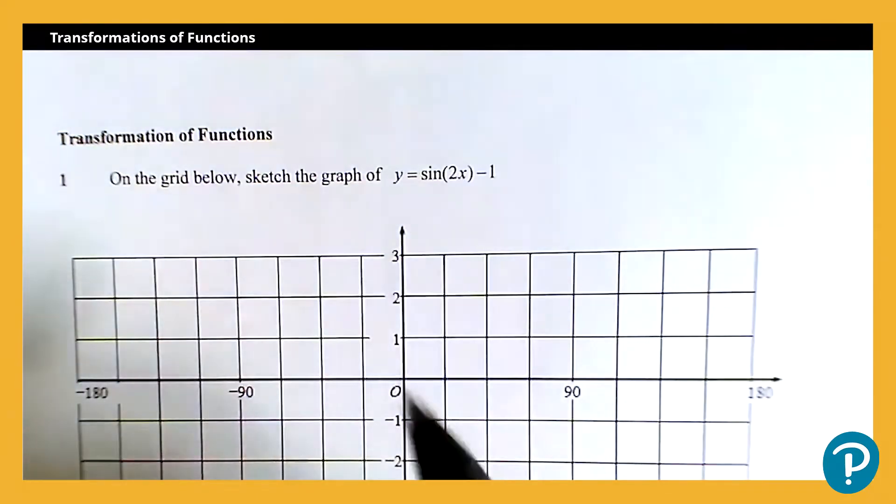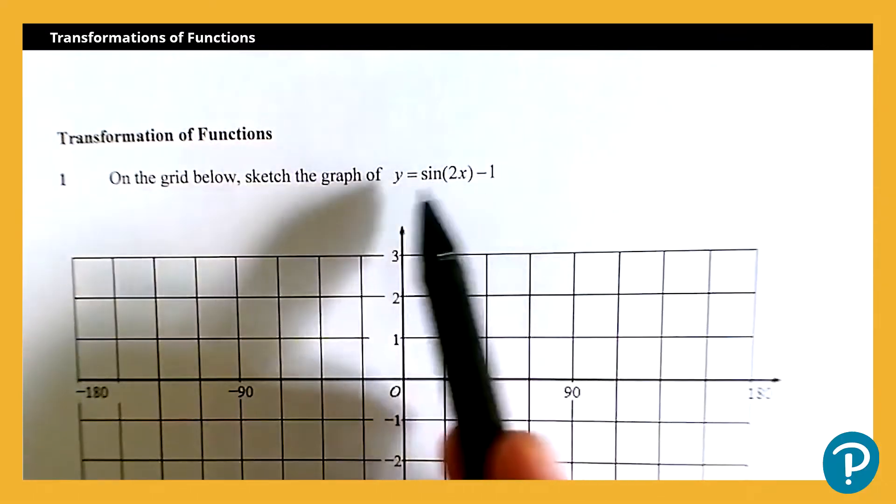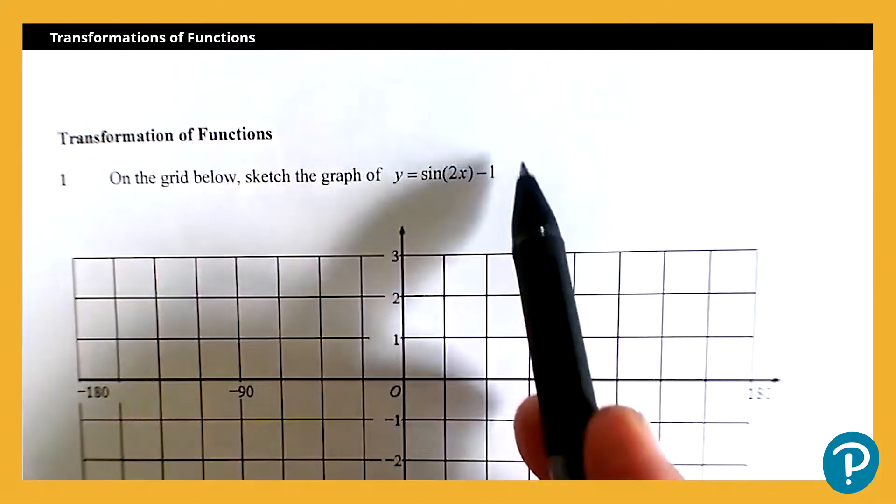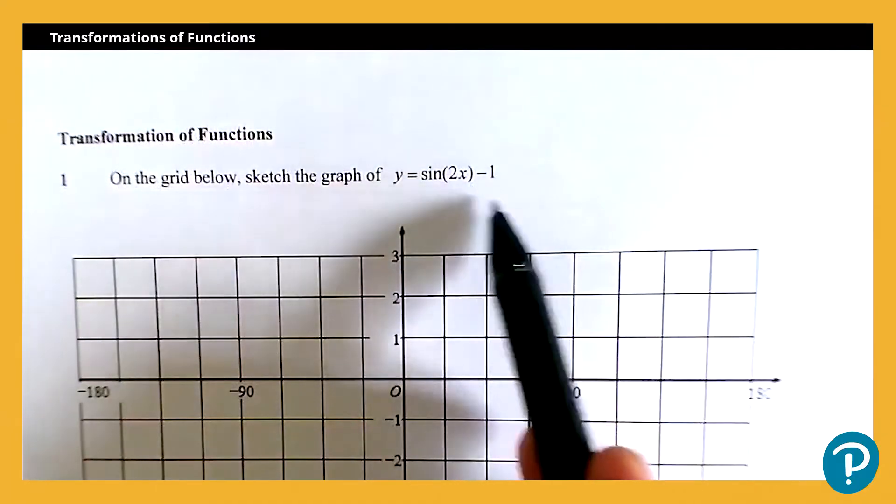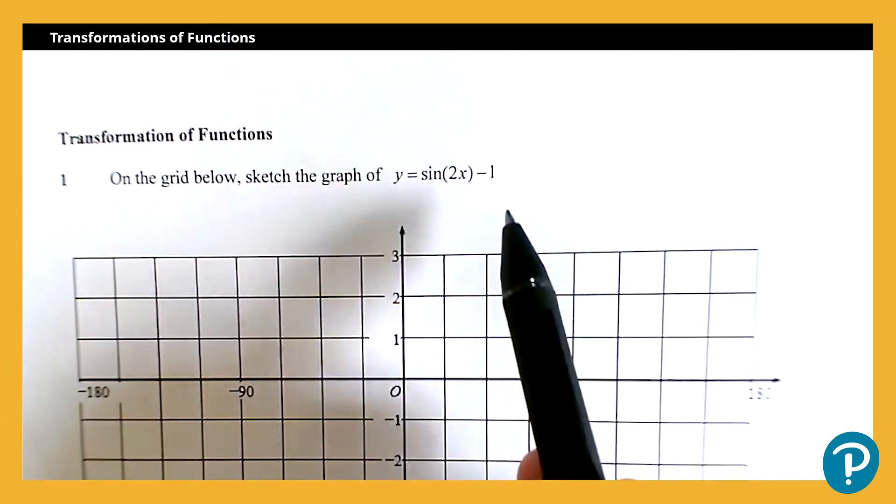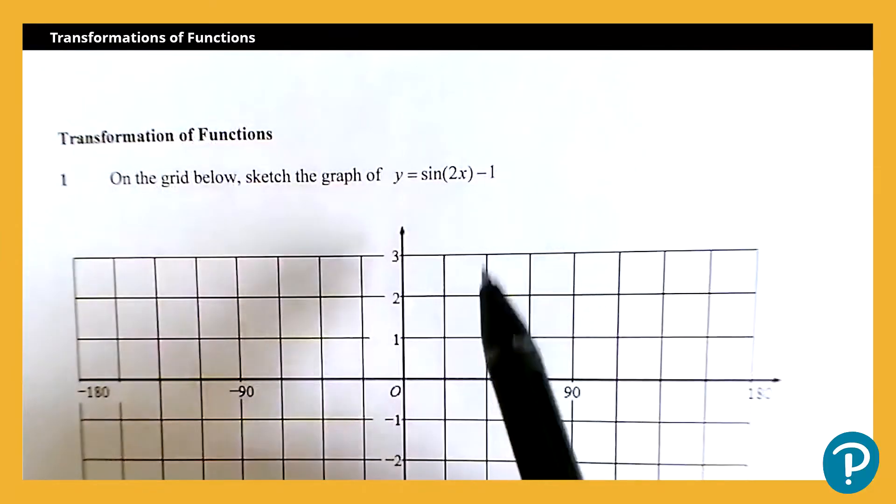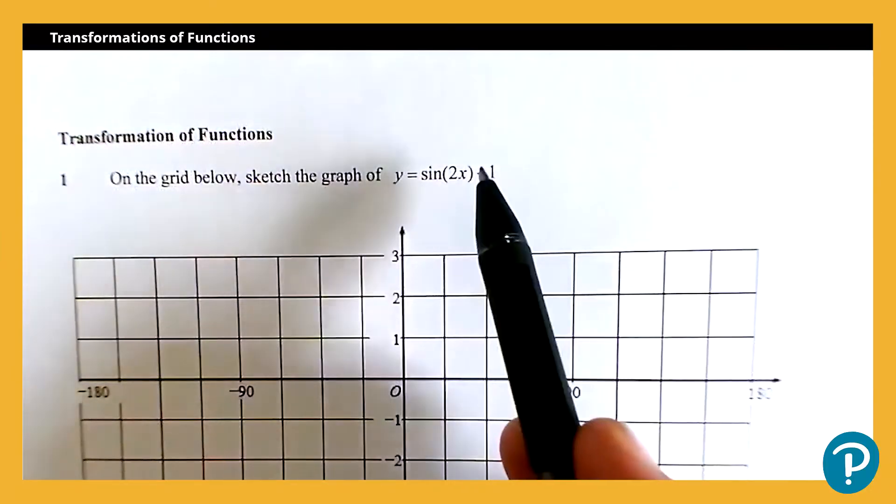And this first one here is actually a combination of transformations. We should recognize that with this subtract 1 at the end, that's going to be a translation of 0, negative 1. So we know we're going to translate the graph 1 down in the y direction.